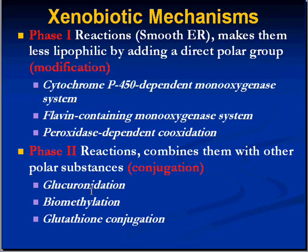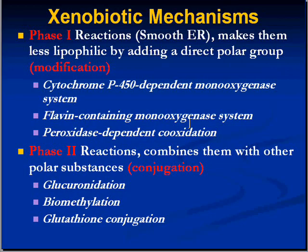In phase one, you're adding something onto the molecule; in phase two, you're combining it with something else. The enzyme systems resulting in phase one reactions or modification are the cytochrome-dependent monooxygenases, the flavin-containing monooxygenase system, and the peroxidase co-oxidation systems. These are systems in which substances are given a polar group to make them more polar and therefore less likely to enter the cell. In conjugation, you add a completely new molecule, also making it less lipophilic — the most common example being glucuronidation, but biomethylation and glutathione conjugation are also methods by which toxins are made more polar.